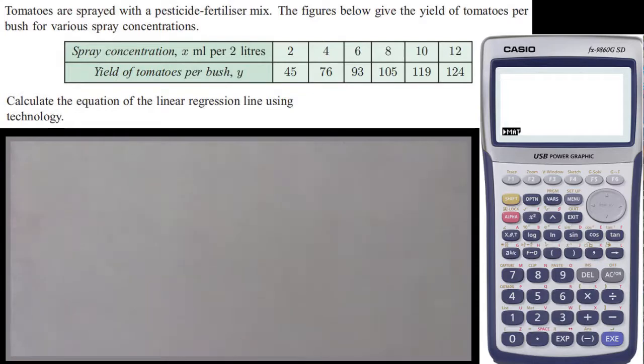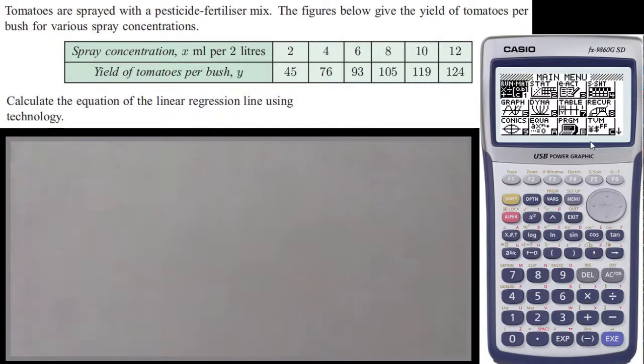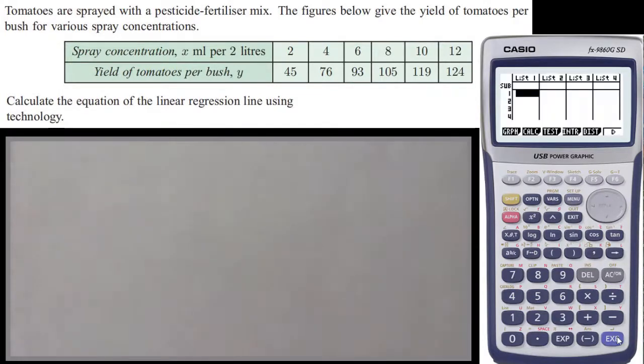We have been asked to calculate the equation of the linear regression line, so the line of best fit, using technology. So we need to go to statistics mode and put in all the X values in list one. So we've got menu stats. If you've got other lists in here, clear them. I've thankfully got them cleared already. So you put all your X values in list one and all your Y values in list two.